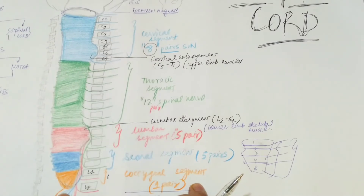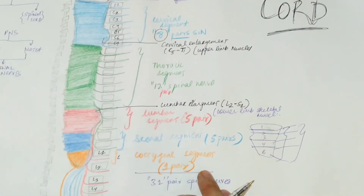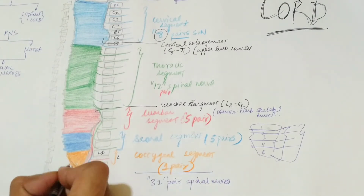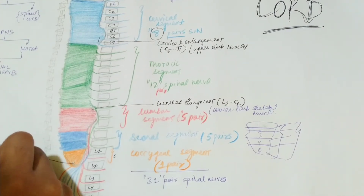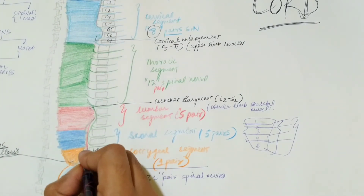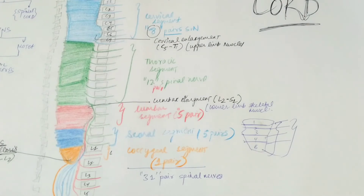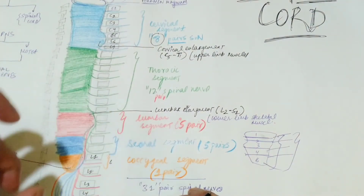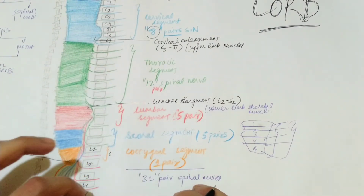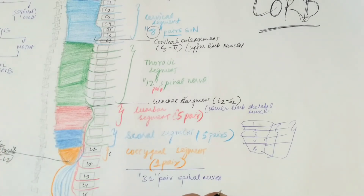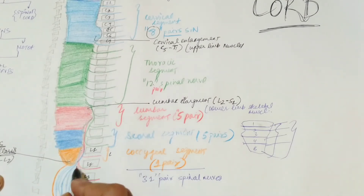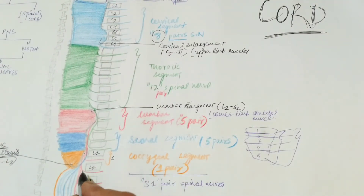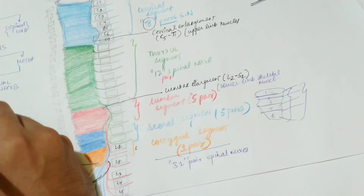Now let's look at the ending of the spinal cord — the pointed terminal part has a special name called the conus medullaris. It is present at the level between L1 and L2. Below this, the spinal nerves resemble a horse's tail, and this collection of nerve roots is called the cauda equina. Cauda means tail and equina refers to the fibers — so it is like hairs originating from the tail. The cauda equina extends from L2 to coccyx one.